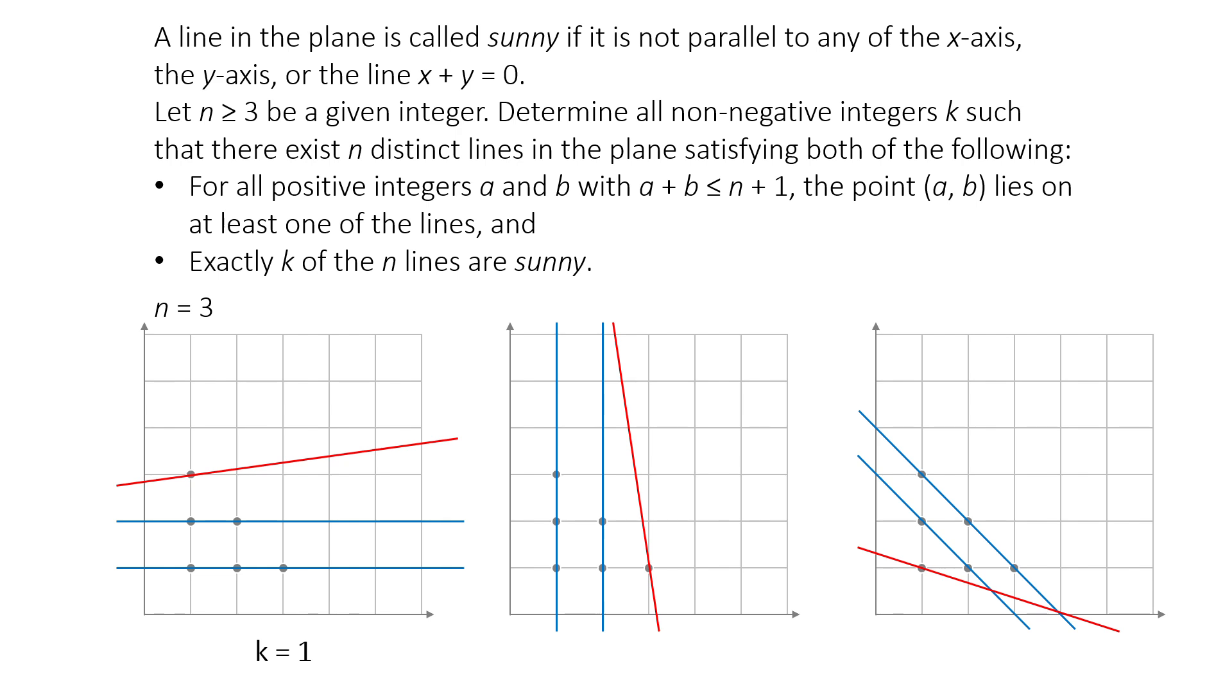Let's consider whether it's possible to have exactly two sunny lines. If we look at the diagram, we quickly notice a key limitation. Only non-sunny lines can pass through three points, and a sunny line can pass through at most two points. And these two points are always a corner point and midpoint of the opposite side.